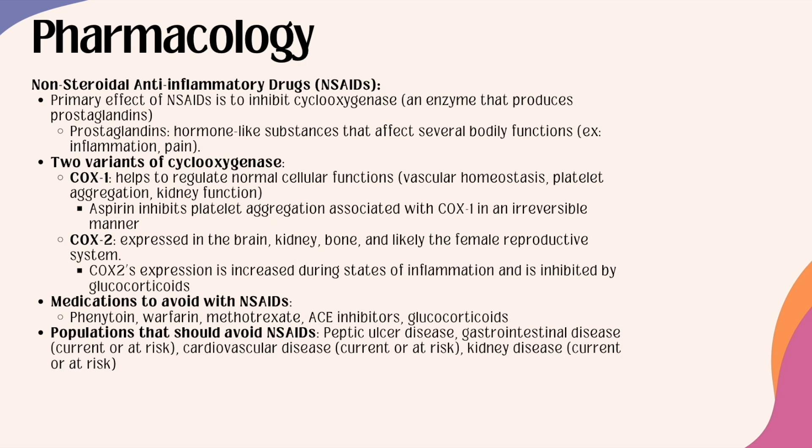Now let's focus on some specific drug classes, starting with NSAIDs — non-steroidal anti-inflammatory drugs. There are more than 20 different agents available within this class, widely used for their analgesic, anti-inflammatory, and antipyretic properties. The primary effect of NSAIDs is to inhibit cyclooxygenase, an enzyme that produces prostaglandins — key in the inflammatory process. Prostaglandins are hormone-like substances that affect several bodily functions, including inflammation and pain.